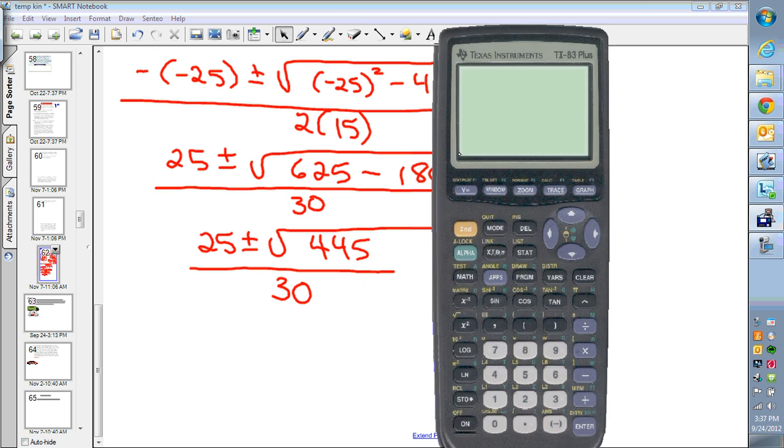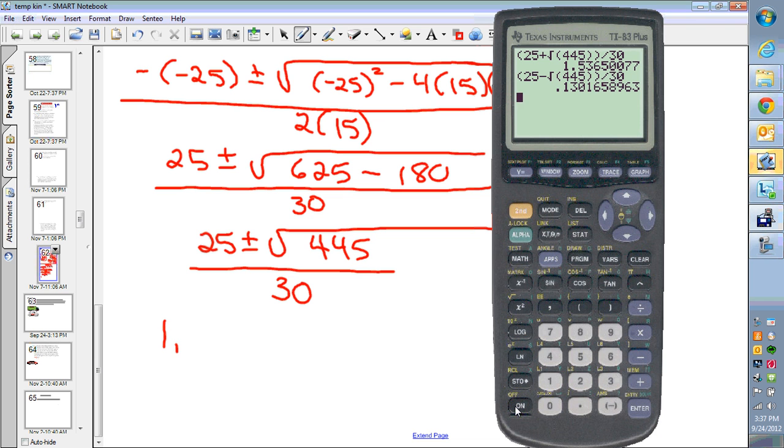So we'll bring up the calculator, turn it on. And I've pre-worked them out. The 25 plus square root 445 over 30 gives you 1.53 as one answer if you use the positive. And you get 0.130 if you use the negative. And those are the two x's that you get. And then from the question you decide which one of those makes sense for us.